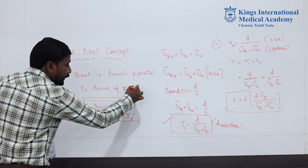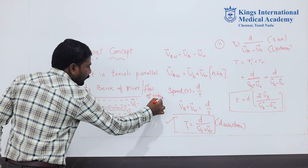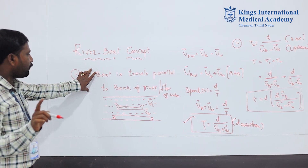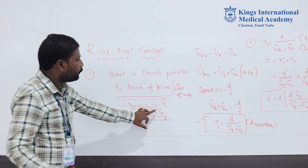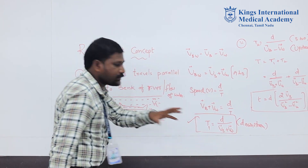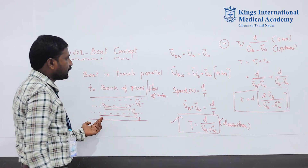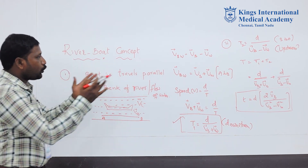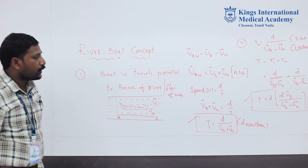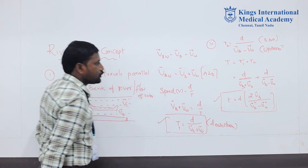The bank of the river corresponds to the flow of water — don't confuse this. This is a very important topic at NEET level. Two concepts: boat travels A to B gives time T1 equals D divided by (VB bar plus VW bar), which is downstream. Boat travels B to A is upstream. The total time T equals D multiplied by 2·VB bar, divided by (VB bar squared minus VW bar squared).